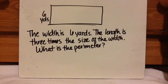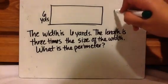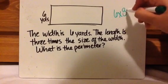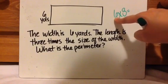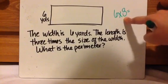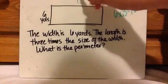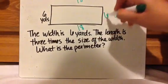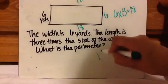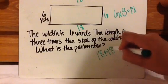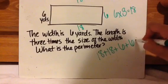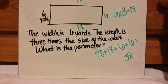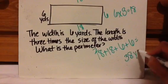Alright, so the width is 6 yards, which they gave us. The length is 3 times the size of the width. What is the perimeter? So 3 times the size means times 3. So if the width is 6, they are saying the length is 3 times that size. So 6 times 3 equals 18. So the length is 18. The width is 6 and 6. So I'm going to add that up. And I got 38 yards as my answer.